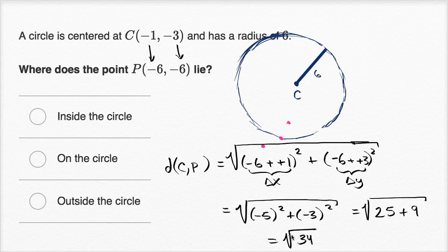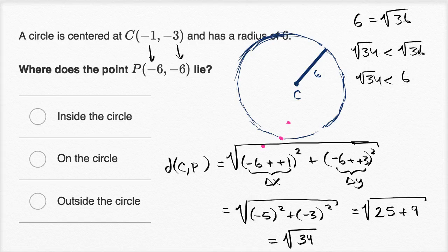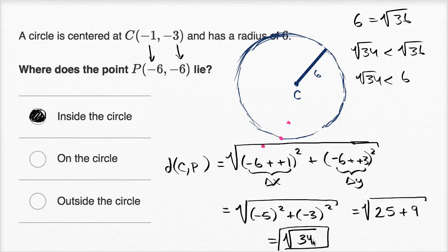Now the key is: is the square root of 34 less than six, greater than six, or equal to six? We know that six is equal to the square root of 36. So the square root of 34 is less than the square root of 36, which means the square root of 34 is less than six. Since the distance between C and P is less than six, we are on the inside of the circle. If we had gotten the square root of 36, we'd be on the circle, and if we'd gotten something larger like the square root of 37, we would have been outside the circle.